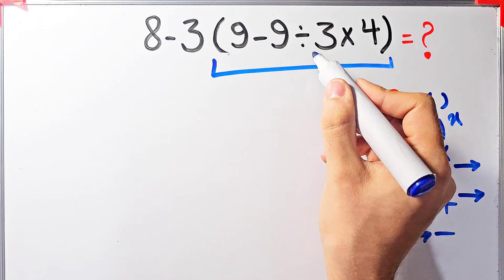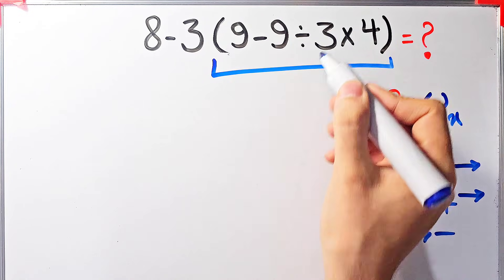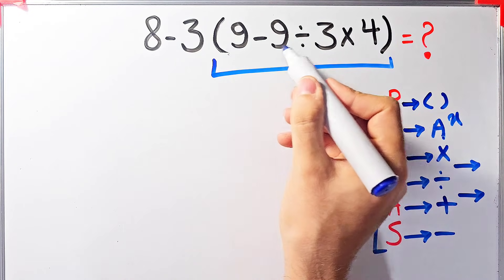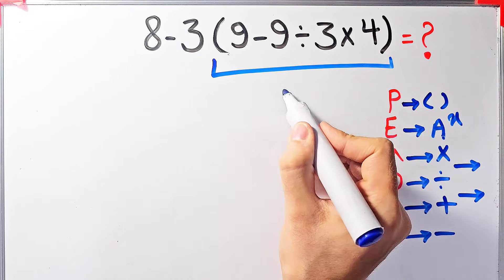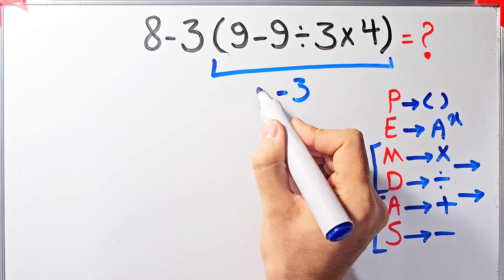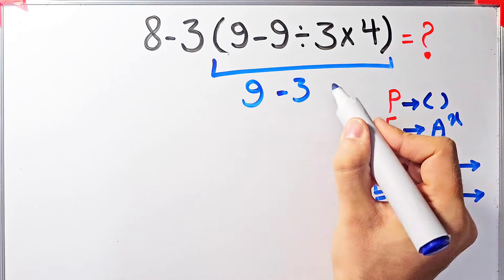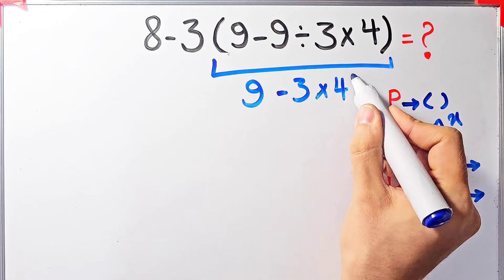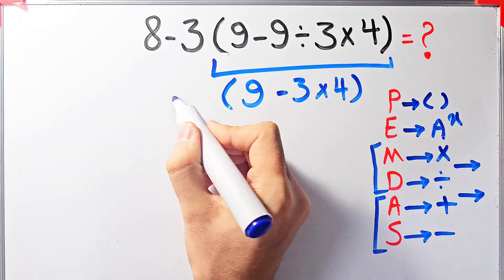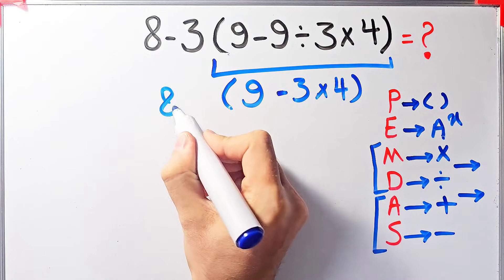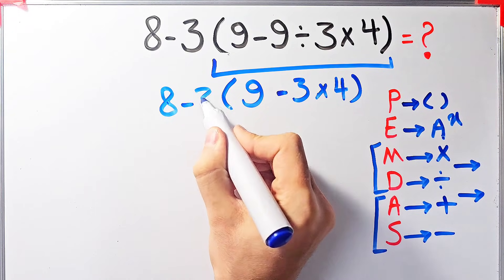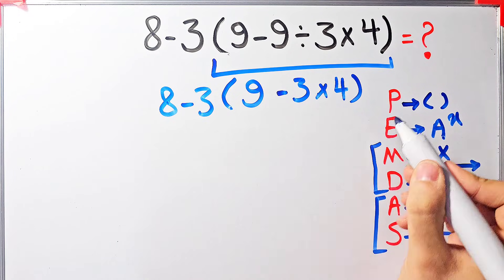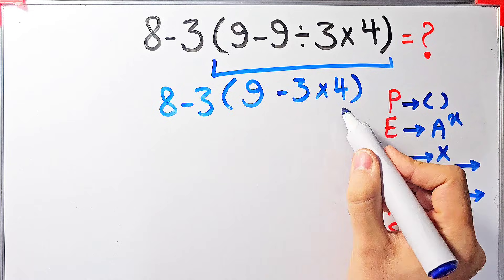First we simplify the division: negative 9 divided by 3 equals negative 3. Now we have 9 minus 3 times 4 inside the parenthesis, and the full expression is 8 minus 3 times, then the parenthesis containing 9 minus 3 times 4.